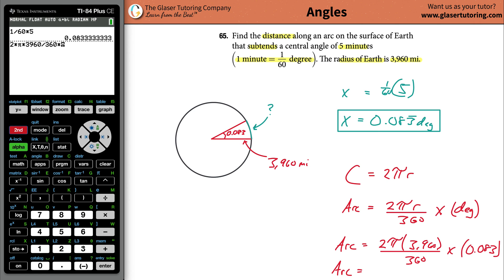So I'm going to hit second answer. What that does is it pulls my answer from the top and plugs it in. And there it is. So my arc length now is going to be 5.76, roughly. Just stop there. You can round it there if you want.